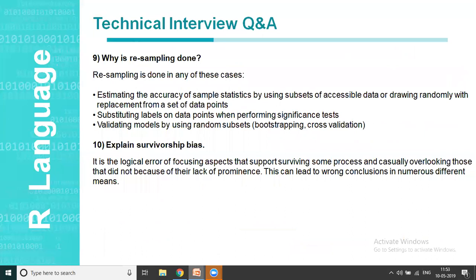The ninth one is why is sampling done? Assume a case here that you sample the data once and your sample is now giving you wrong results. When you're estimating the accuracy of sample statistics by using subsets of accessible data or by drawing randomly with replacement from a set of data points, breaking this down into easier understanding, it is just to ensure that you're checking your value for different data sets within the same data. You want to check if your values are working fine for random values. This is the first case where the sampling is done. Secondly, you want to substitute labels on data points when you're trying to perform some significance test. Thirdly, when you are validating models by using random subsets.